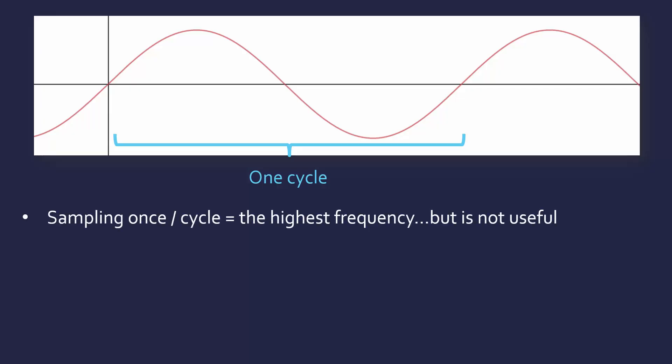Let's say we're taking one sample per cycle, which is going to match our highest frequency. This is not actually useful. Let's say we take a sample at the peak. It doesn't matter where we take it, necessarily. Well, it does matter, but for now, let's say we're doing it at the peak.